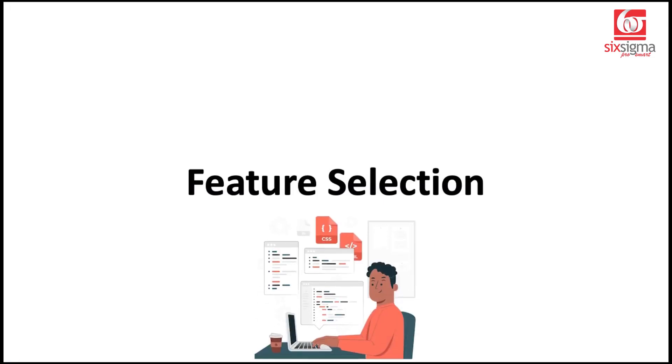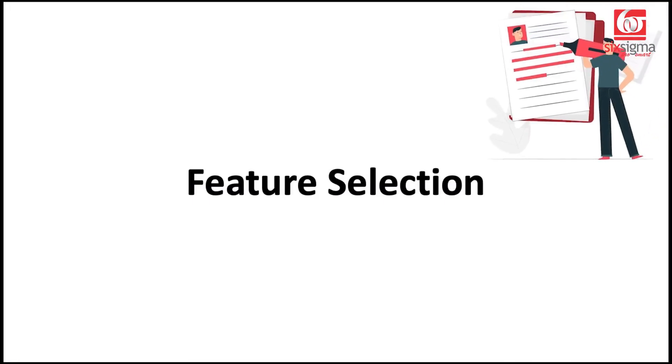Not all the features provided to us are always meaningful. We have to find out the ones which are most important and retain them in our models. Thankfully, scikit-learn, the most famous library in machine learning, comes very handy. It has a specific module called feature selection, and that's what we'll be learning about today.